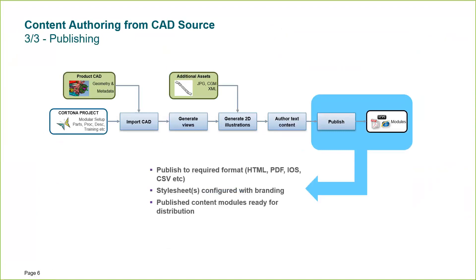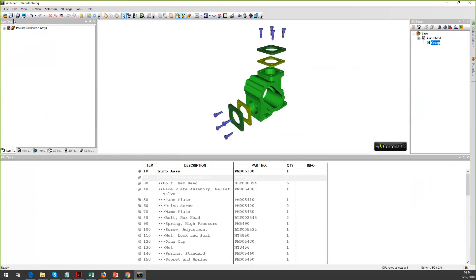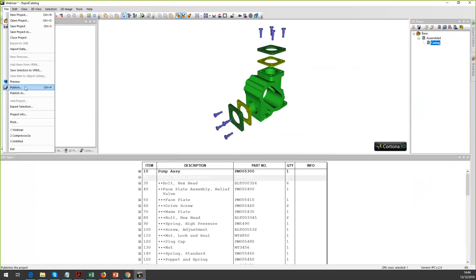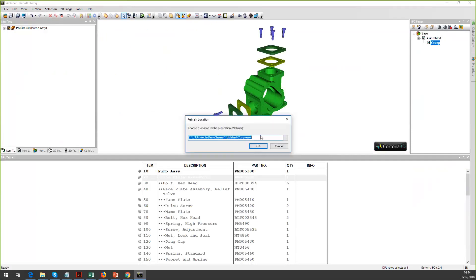The final part of the process is publishing. Up until now I'm just creating assets and linking them together — building up a project rather than an authored output. It's now that I decide what format to publish in, whether it's HTML, PDF, iOS, or whatever. This is governed by the style sheets programmed into the software. Today I'm showing you the out-of-the-box style sheets, but all customers get a custom style sheet with their branding and specific requirements.